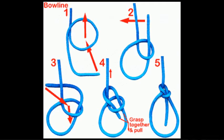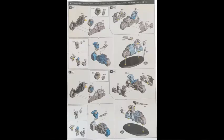We can do it for new skills, like tying a knot with rope. This shows us exactly where the rope needs to go. We can also use it for toys — it can tell us how to put toys together.